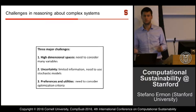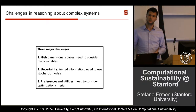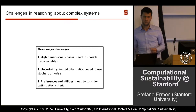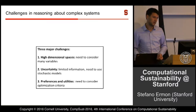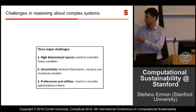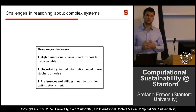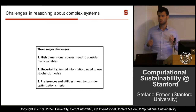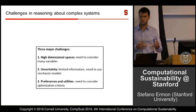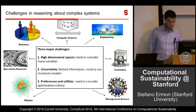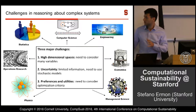The second major challenge is that we typically have limited information about the systems we want to model. There could be uncertainty in the parameters, noisy measurements, or quantities we don't get to observe. So we have to take uncertainty into account and consider stochastic models. Finally, we're typically building these models for a specific task, so we also have to consider a utility function that encodes desirable outcomes and optimize for that.